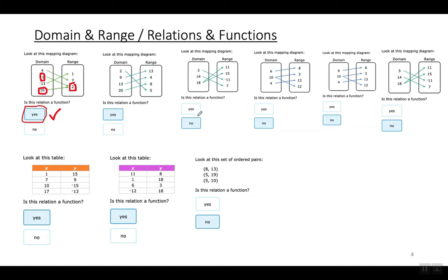Now let's look at this example that is not a function. Look at 18 — when x is 18, I get two different answers: I get 11 and I also get 15. That is not a function, because in order to be a function, every input can only have one output. Every x value can only have one y value. When I input the x value of 18, I output two different values for y, and that is a no-no. You cannot do that in order to be a function. Learn to think about it that way: every input only has one output, or every x value can only have one y value.